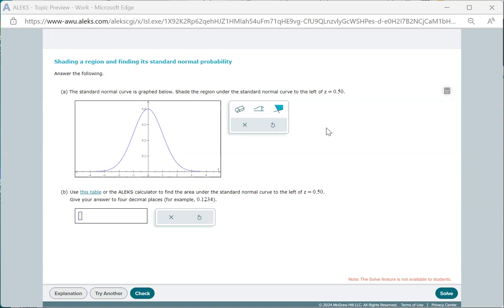For part A, shading the region, we're going to use the tools in the input box to do this. First, there's a vertical segment tool we use to place the line. We left-click on the vertical segment tool, move to the z-value, here z equals 0.5, left-click again to place the vertical line.